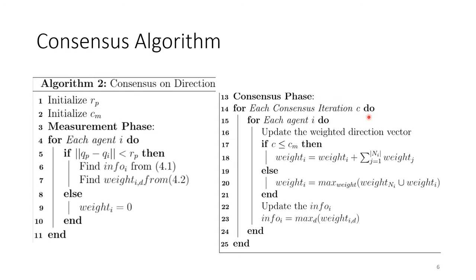For the consensus phase, you update the weighted direction vector based on consensus iterations by summing them together. Otherwise, you choose the maximum weight among your neighbors. Then you update the info based on the maximum direction for your weight vector.